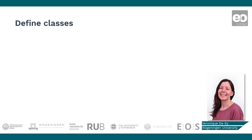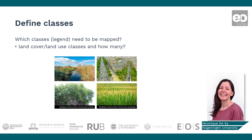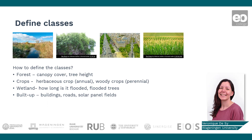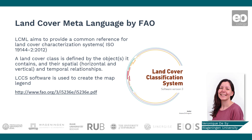An important step in image classification is defining the classes. Which classes need to be mapped and how are they defined? It is important to define classes in such a way that they don't overlap and are mutually exclusive. An example of a land cover class is forest, which can be defined based on canopy cover and tree height. You can make use of existing classification systems or languages to define classes in a systematic way. The land cover meta-language developed by the Food and Agricultural Organization is a common reference for systematic land cover characterization.